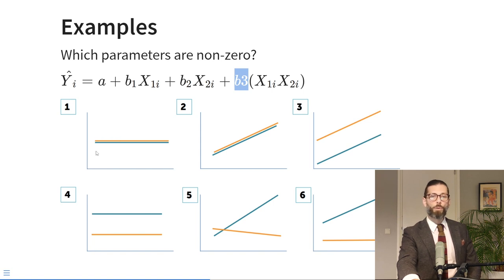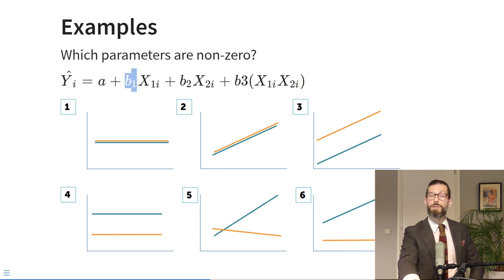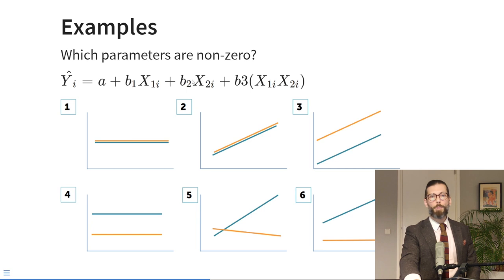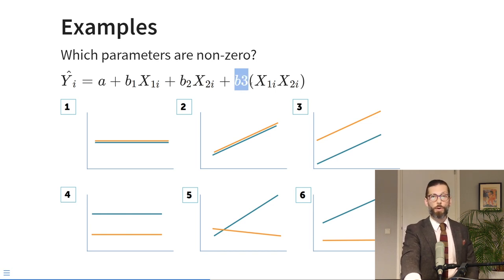In figure two, both groups probably have an intercept starting at about zero, so A is zero. They both have the same intercept, so the effect of the dummy variable is zero. They both have a positive slope, so the effect B2 is positive. And they both have the same slope, so the interaction effect is zero.